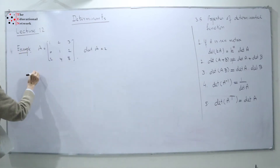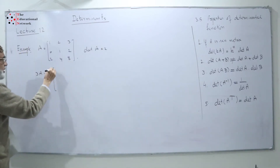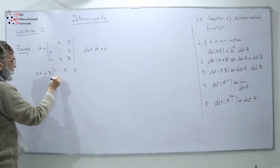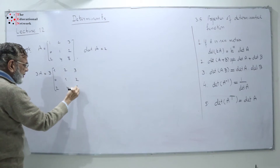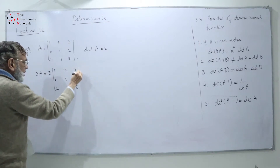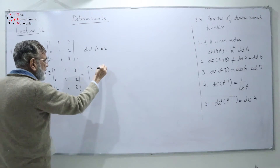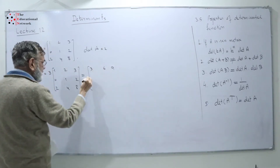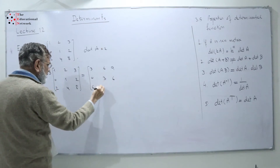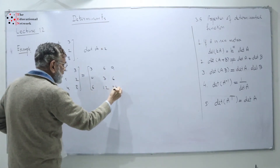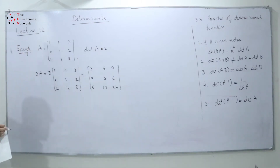I write 3A. Multiplying the matrix by 3, I get 3, 6, 9 in the first row; 0, 3, 6 in the second row; and 6, 12, 24 in the third row, because each entry is multiplied by 3. Now I want to find determinant of 3A.